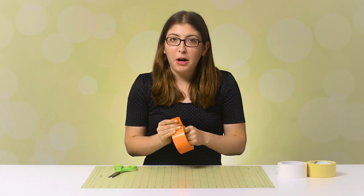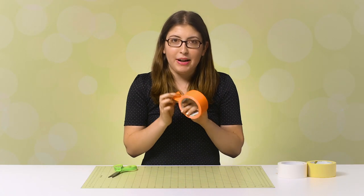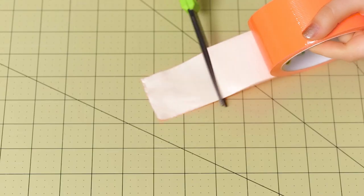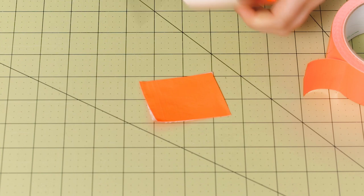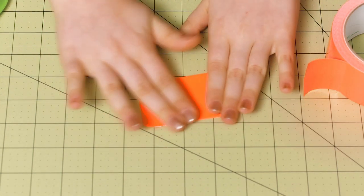We're going to begin by making a small piece of duct tape fabric out of our orange tape. We're going to make it three layers thick so that the necklace has a bit of weight to it.